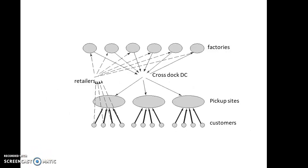When we see the diagram, we can understand the process of this method. Customers place orders through retailers and then the information is sent to the factories. The dotted line shows the information flow and solid line shows the product flow. Factories send the products to pickup sites through cross-docking distribution center.